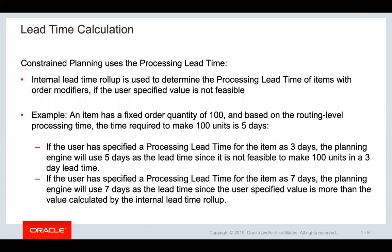In constraint planning, internal lead time roll-up is used to determine the processing lead time of items with order modifiers if the user-specified value is not feasible. For example, if an item has a fixed order quantity of 100 and the time required to make 100 units is 5 days — if the user has specified a processing lead time of 3 days, the planning engine will use 5 days since it is not feasible to make 100 units in a 3-day lead time. If the user specified 7 days, the planning engine will use 7 days, since the user-specified value is more than the value calculated by the internal lead time roll-up.